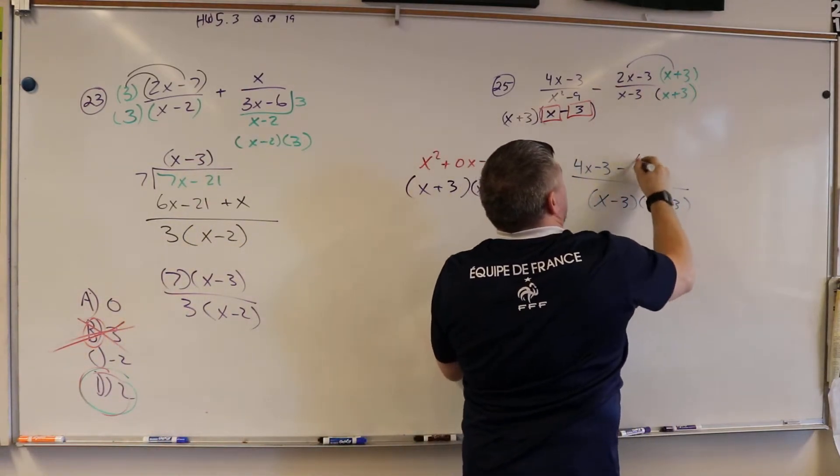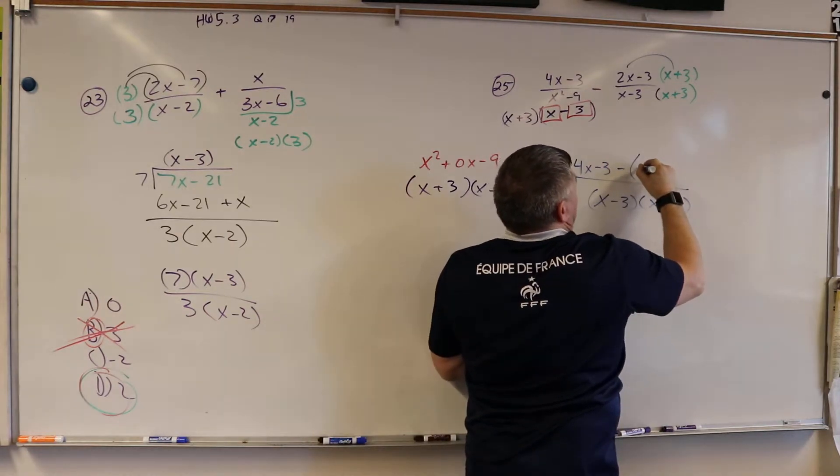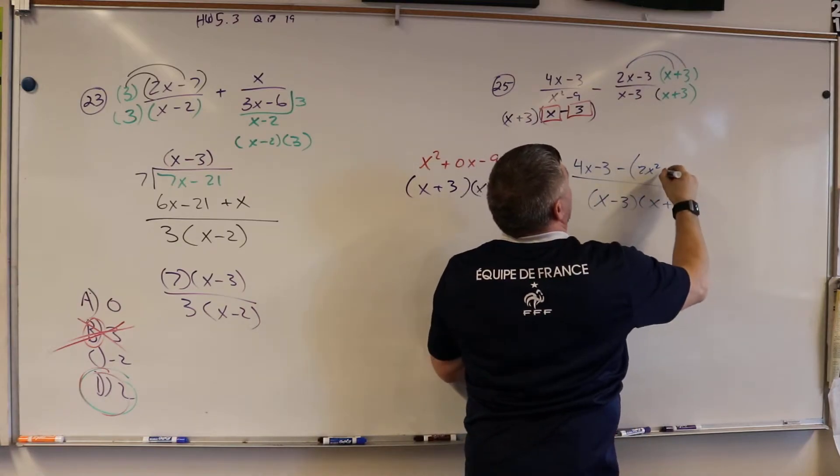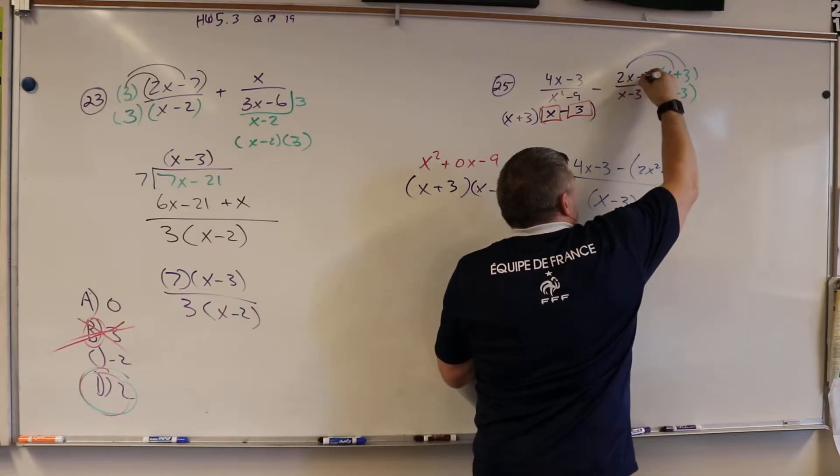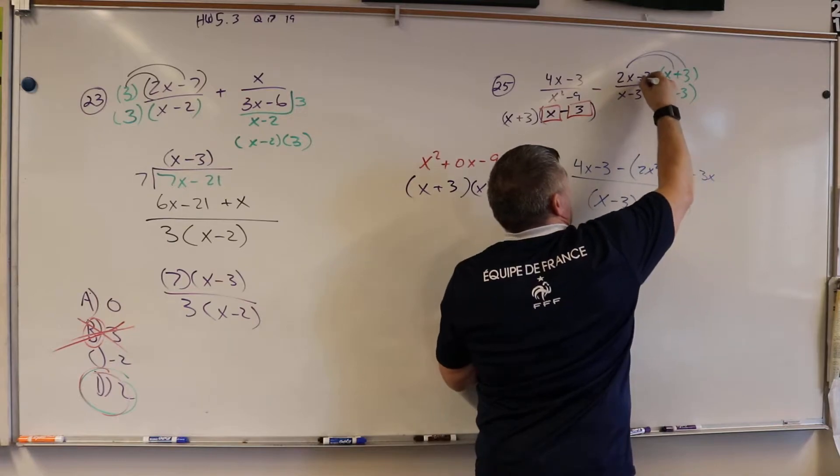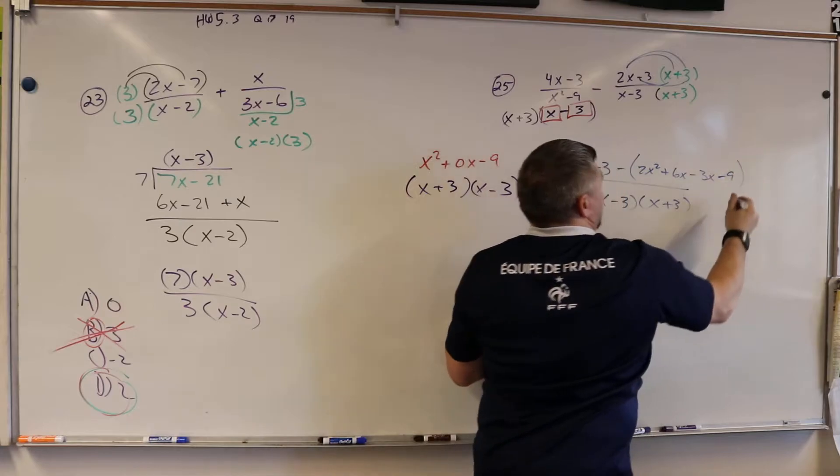2x times x, well that would be 2x squared. 2x times 3, well that would be 6x. Negative 3 times x, that would be negative 3x. Negative 3 times 3, that would be minus 9, right?